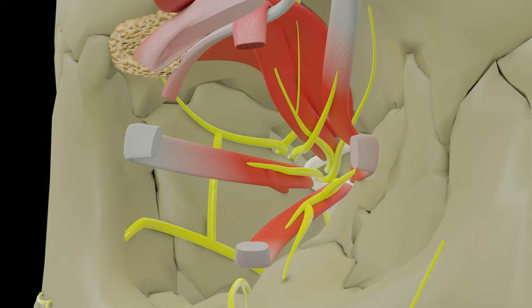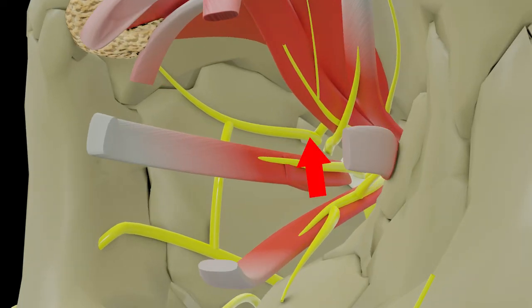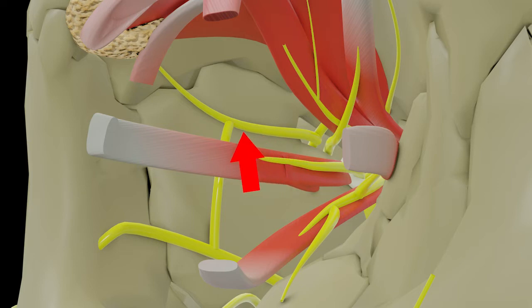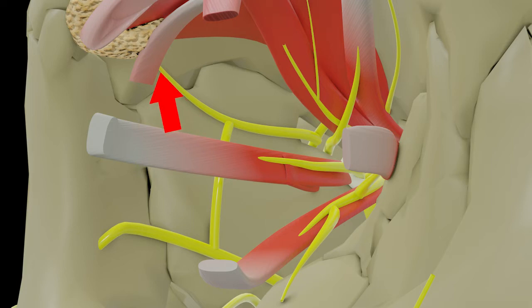Now let's add the other nerves entering the orbit through the superior orbital fissure — the three branches of the first division of the trigeminal nerve: lacrimal, frontal, and nasociliary. The lacrimal nerve, the smallest of the three terminal branches of the ophthalmic nerve, passes through the lateral part of the superior orbital fissure. It runs along the upper border of lateral rectus, receives a communication from the zygomatic branch of the maxillary nerve, then passes deep to the lacrimal gland. It supplies the lacrimal gland, conjunctiva, and upper eyelid. The secretomotor fibers to the gland come from the greater petrosal nerve through the communication from the zygomatic nerve.